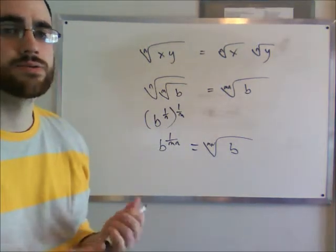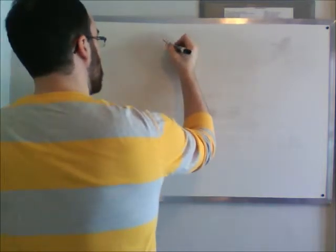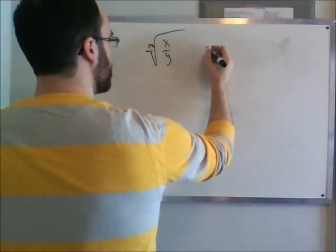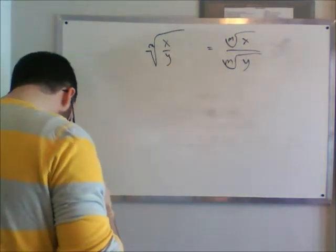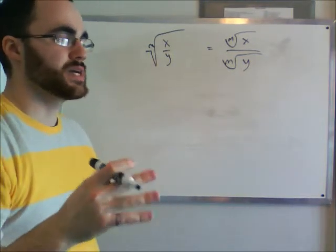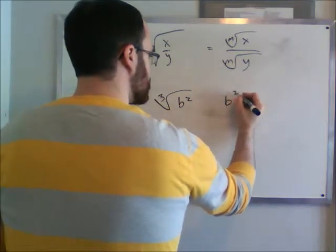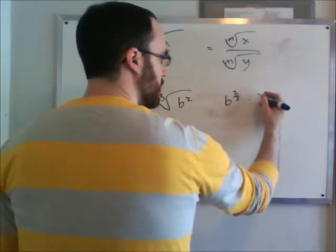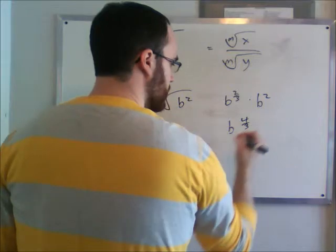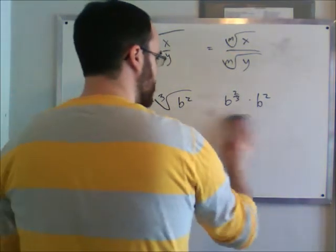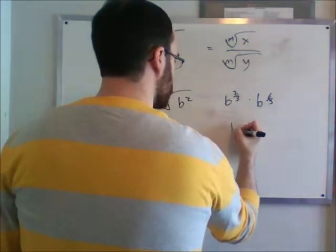That's been a basic intro on radicals and exponents. One more thing: I'd suggest always expressing radicals as fractional exponents. For example, the cubed root of b squared is b to the 2 over 3. If you then multiply by b squared — which is b to the 2 over 3 — you add the exponents. So 2 over 3 plus 2 over 3 is the same as 6 over 3, and adding gives 8 over 3, so the result is b to the 8 over 3.